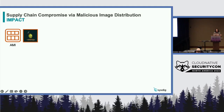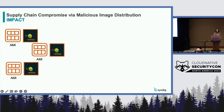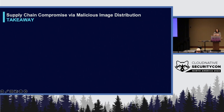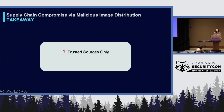The impact on the victim is that they're unknowingly running a crypto miner — possibly multiple if running more than one instance at a time. As your CPU usage goes up, so does that AWS bill, which you are responsible for. The main takeaways for this attack: use images only from trusted sources, and even with trusted sources, have static and runtime security tools on those instances to make sure there's no malicious activity occurring.